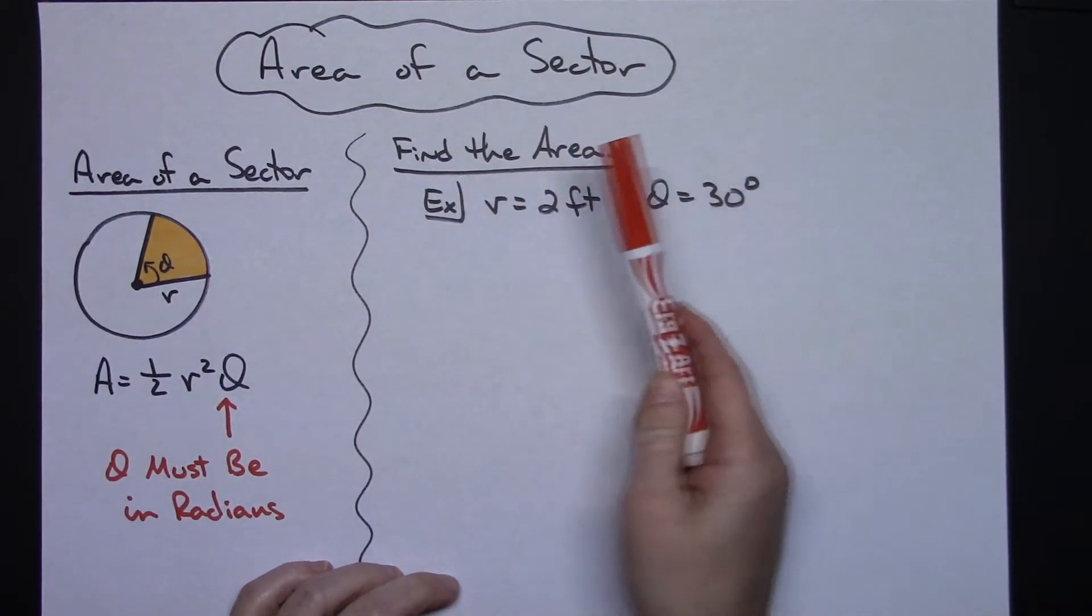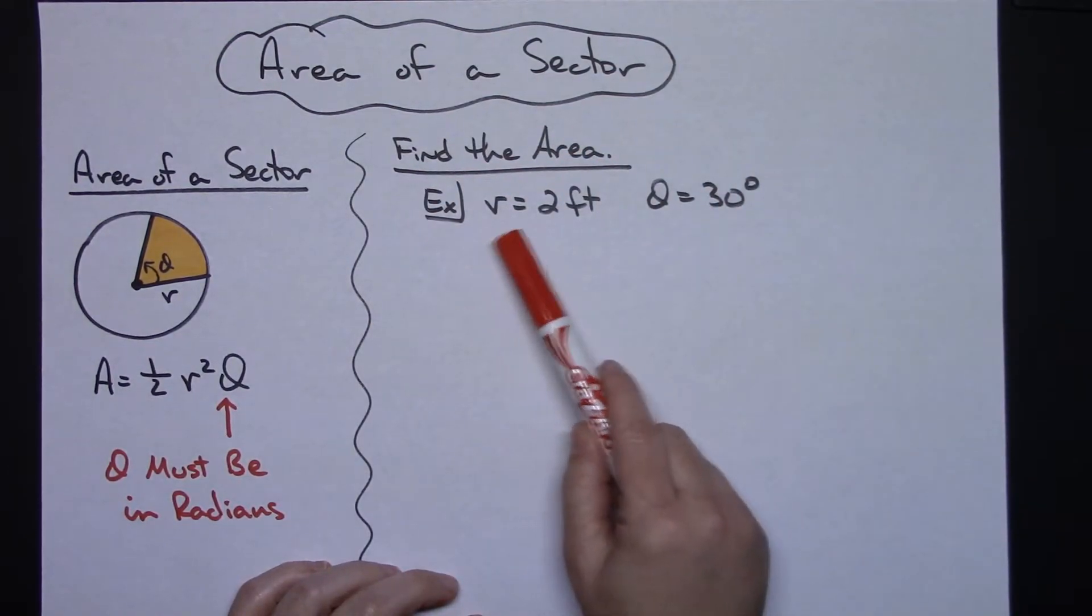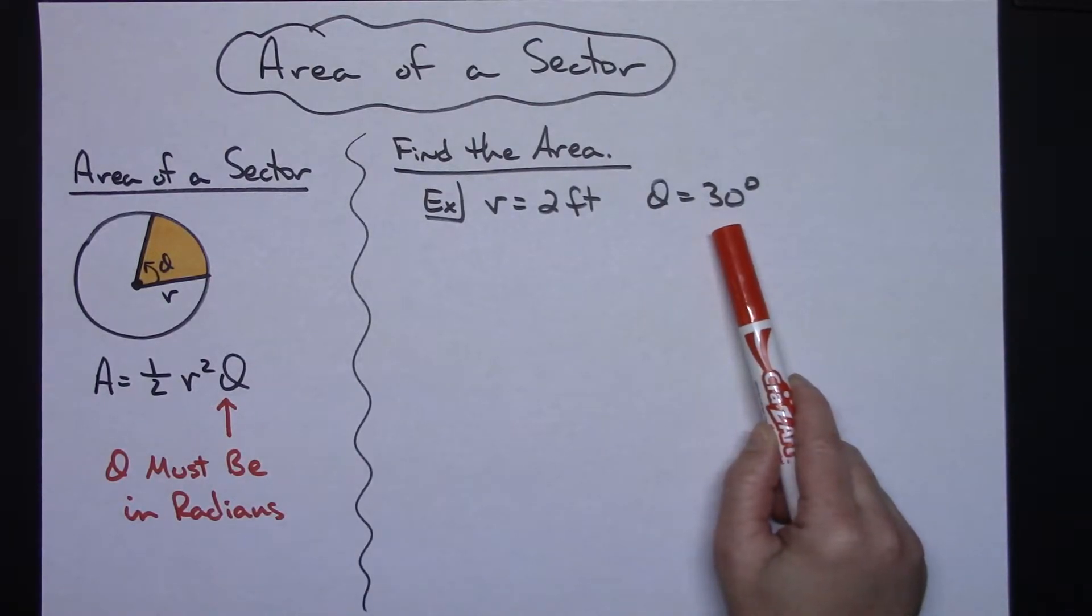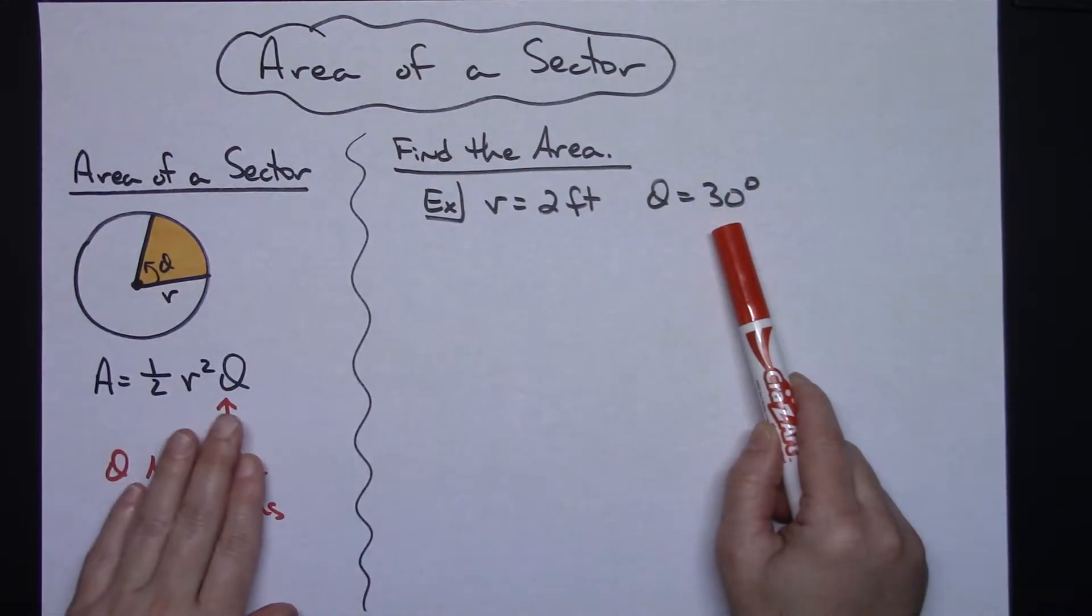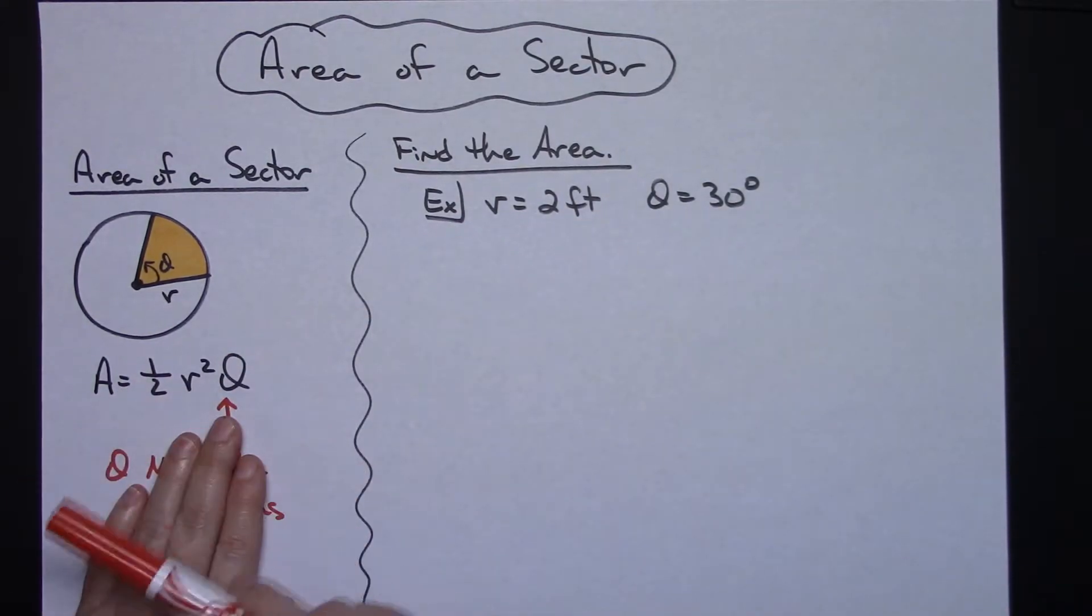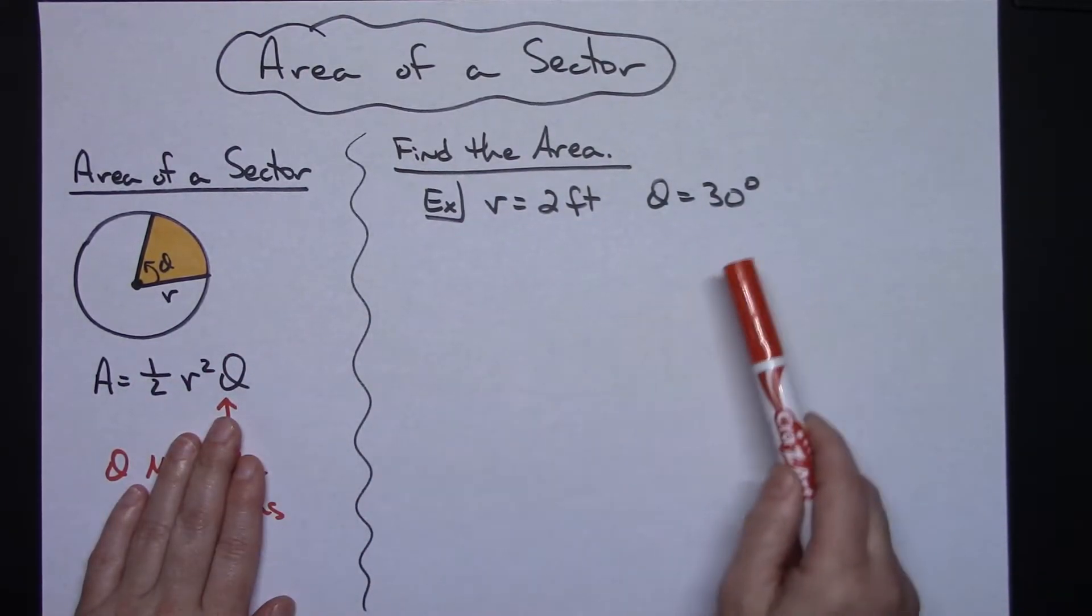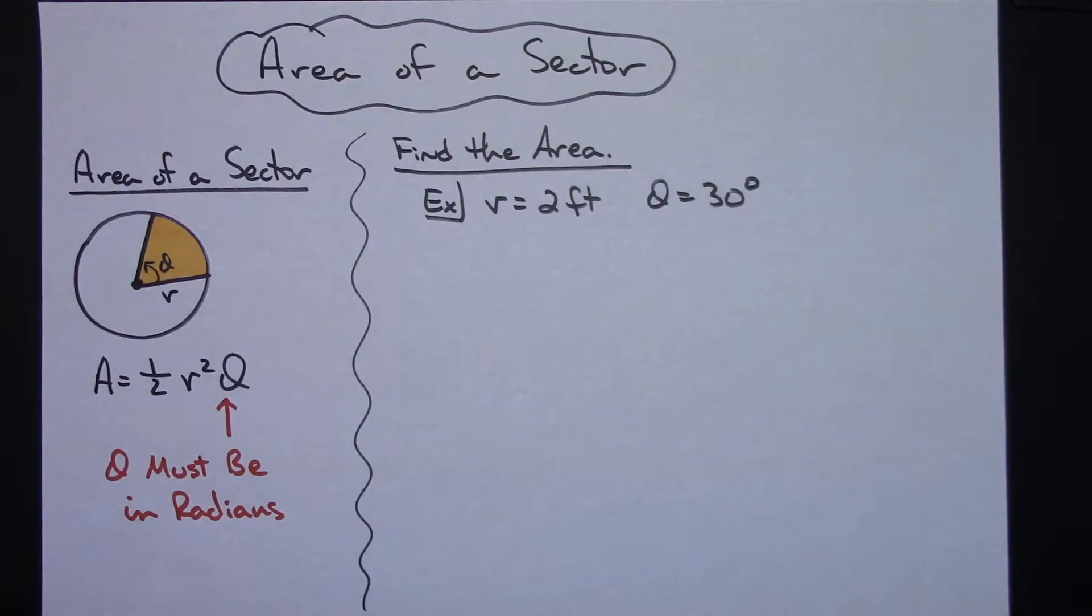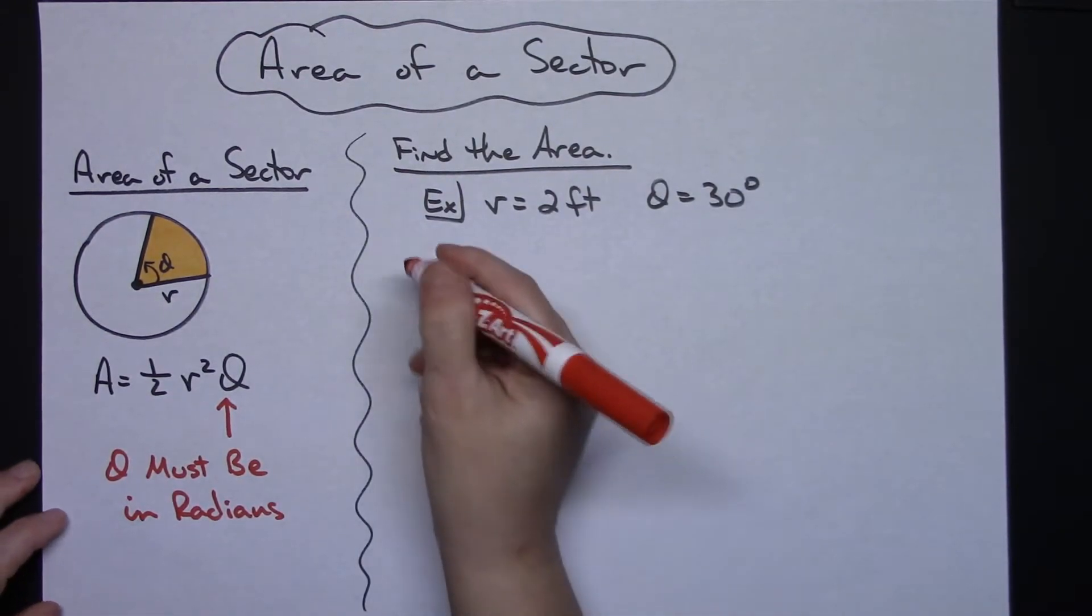Let's suppose that it tells us to find the area and they give us a radius of two feet and they give us our theta as 30 degrees. First off, you do not want to make that mistake of just plugging everything in and multiplying it out. You've got to take a look at the fact that this is in degrees and our theta has to be in radians. So it's really going to be a two-step process here.